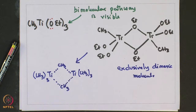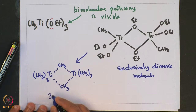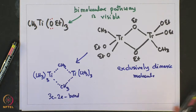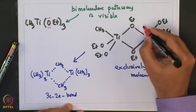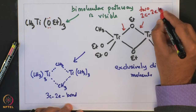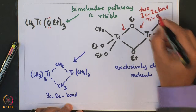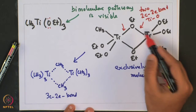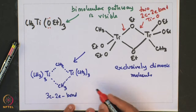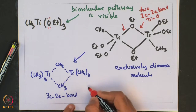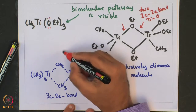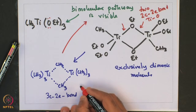This fully supports and gives evidence to the bimolecular pathway as observed in the titanium tetramethyl complex. The difference is that in titanium methyl triethoxide the bridging interactions are classical 2-centered 2-electron bonds between titanium and oxygen, whereas in titanium tetramethyl they are 3-centered 2-electron non-classical bonds. Nevertheless, this bears testimony to the fact that titanium is both electronically and coordinatively unsaturated in titanium tetramethyl and decomposes via the bimolecular mechanism.